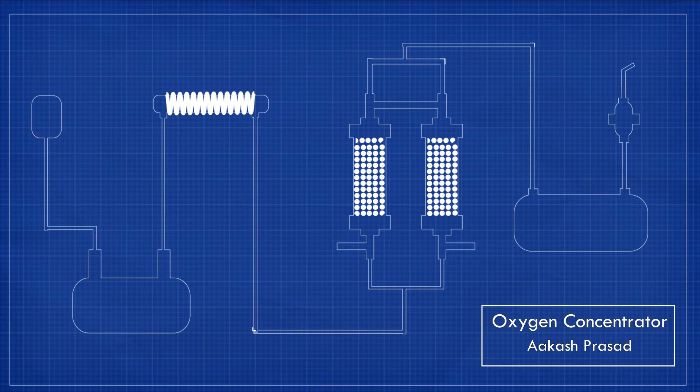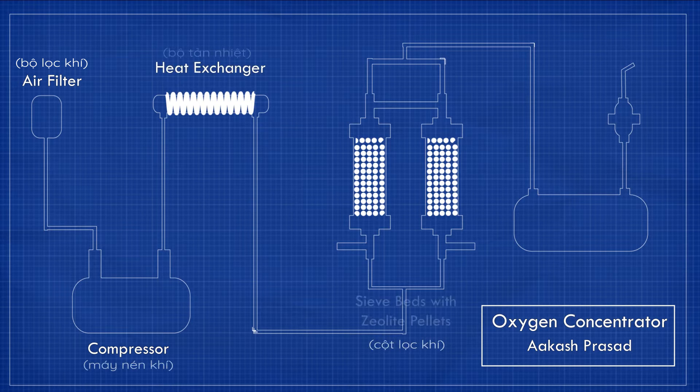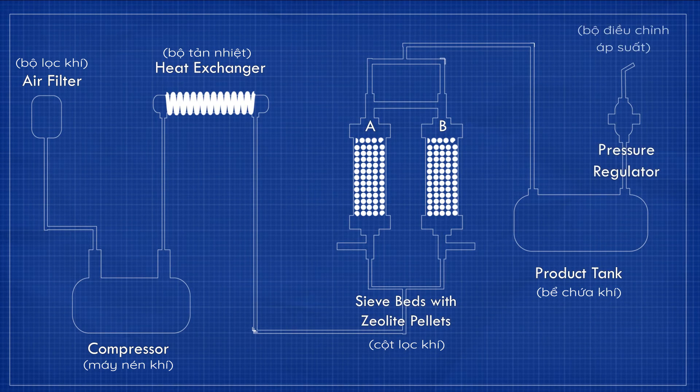The main components of a concentrator are air filter, compressor, heat exchanger, two zeolite sieve beds, product tank, and pressure regulator.